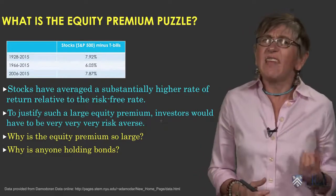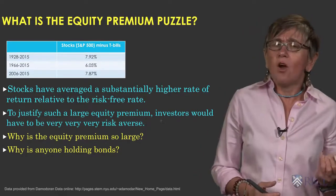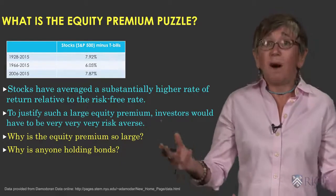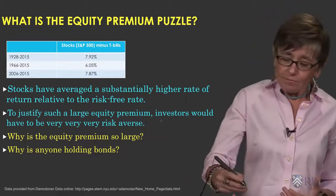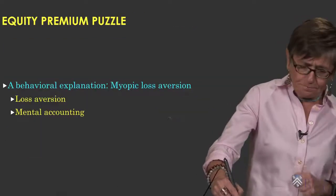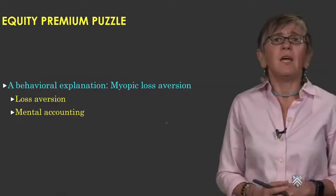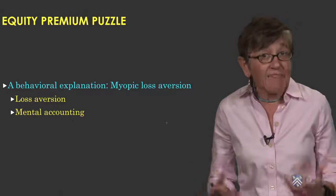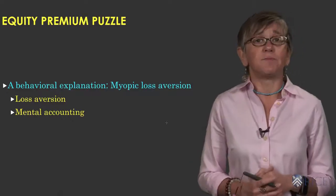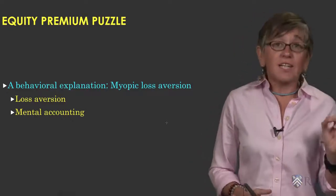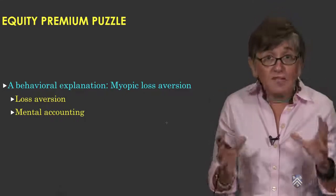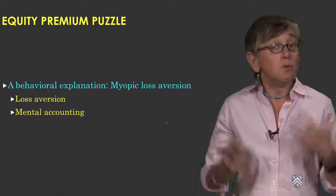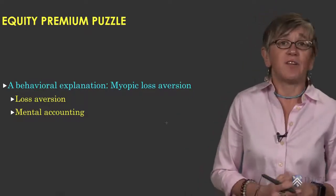So why is the equity premium so large? Or put alternatively, why is anyone even willing to hold bonds? Instead of looking at rational models, we can use behavioral models to understand this puzzle. In particular, we're going to look at a specific type of behavior — what we call myopic loss aversion — to explain this phenomenon.